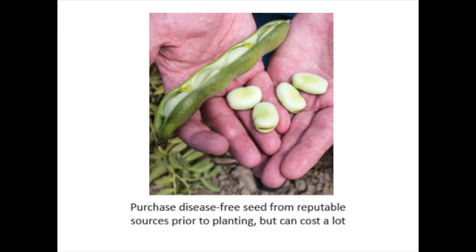The best way to prevent bean anthracnose is by using certified disease-free seed, or seed grown in semi-arid areas with little rainfall such as Idaho where the disease is not a problem, but these seeds are often highly expensive.